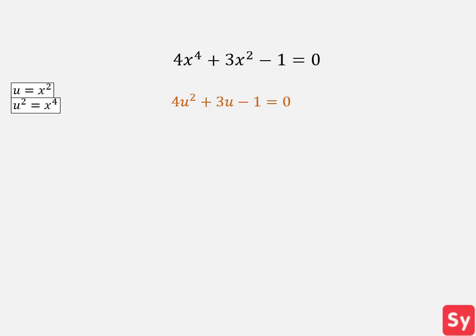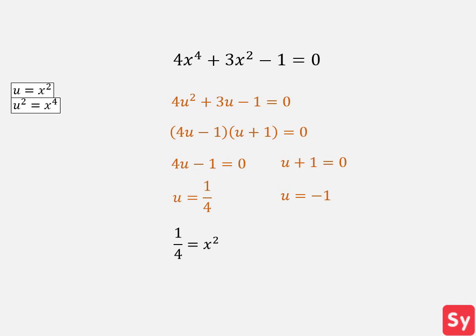Next, we factor the quadratic expression and get 4u minus 1 times u plus 1 equals zero. Now we solve for u by setting 4u minus 1 equal to zero and u plus 1 equal to zero. We get u equals one-fourth and u equals negative 1. Next, we'll rewrite the answer in terms of x. Remember that u is equal to x squared, so we set one-fourth equal to x squared and negative 1 equal to x squared. We solve for x and get x equals negative one-half and one-half, and x equals negative i and i — our answer.